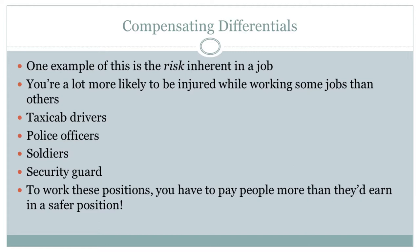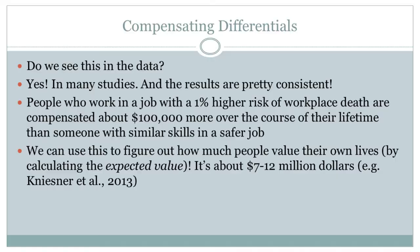One form this takes is the riskiness of the job. Some jobs are simply more risky than others — you're more likely to get injured or killed. Taxi cab drivers, police officers, soldiers, security guards — these are all jobs with a higher than average risk. If two jobs take the exact same level of skill but one is riskier, how are you ever going to get people to work at the risky one unless you pay them more to compensate for that? And we do see this in the data. Jobs that take a similar level of skill but are riskier tend to get paid more.